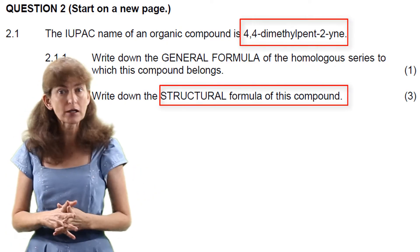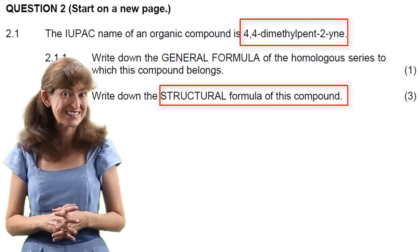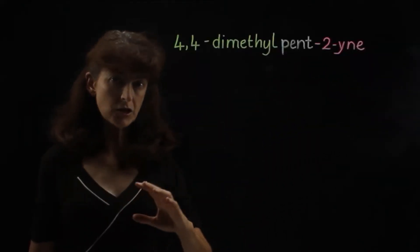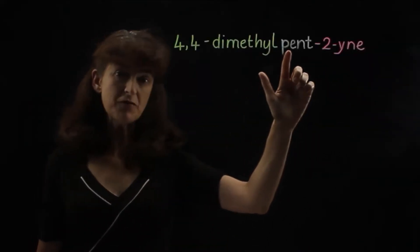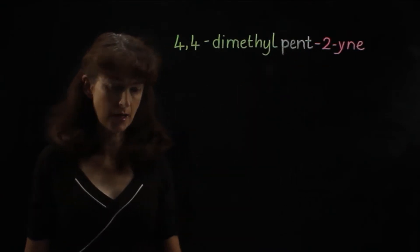Next we have to give the structural formula of this compound. We start with the main chain. We can see that there must be five carbon atoms in the main chain.